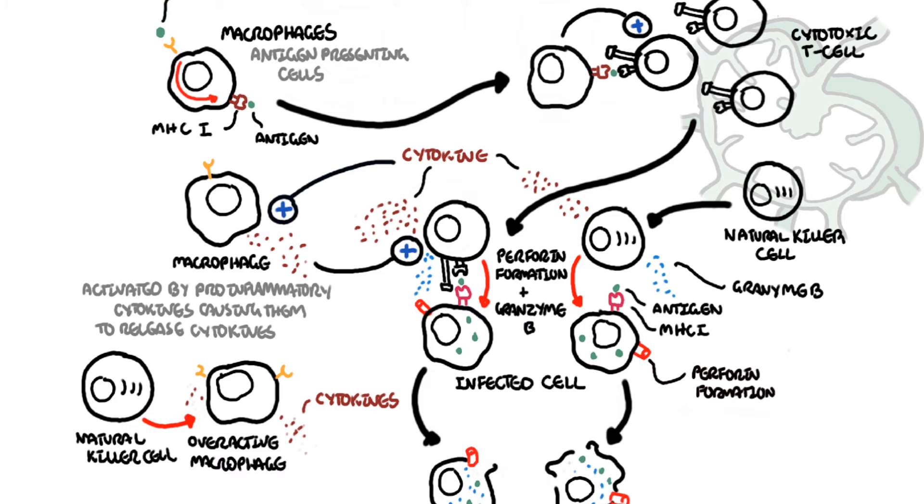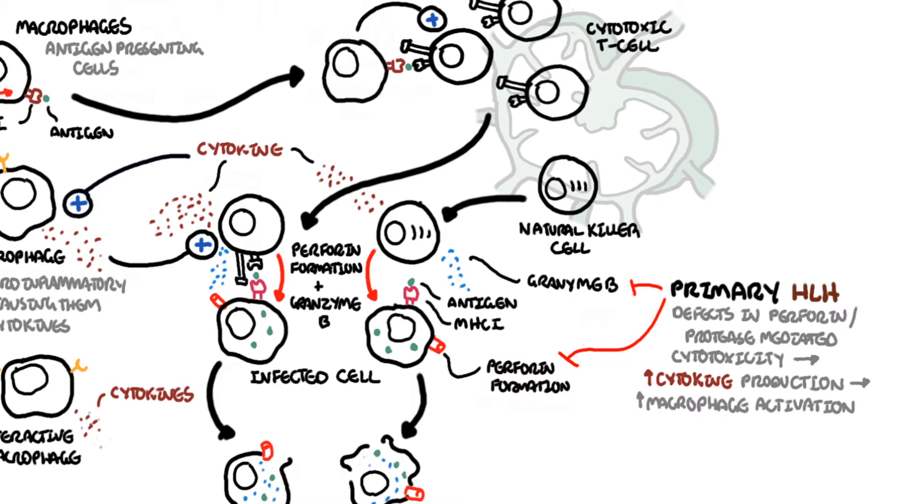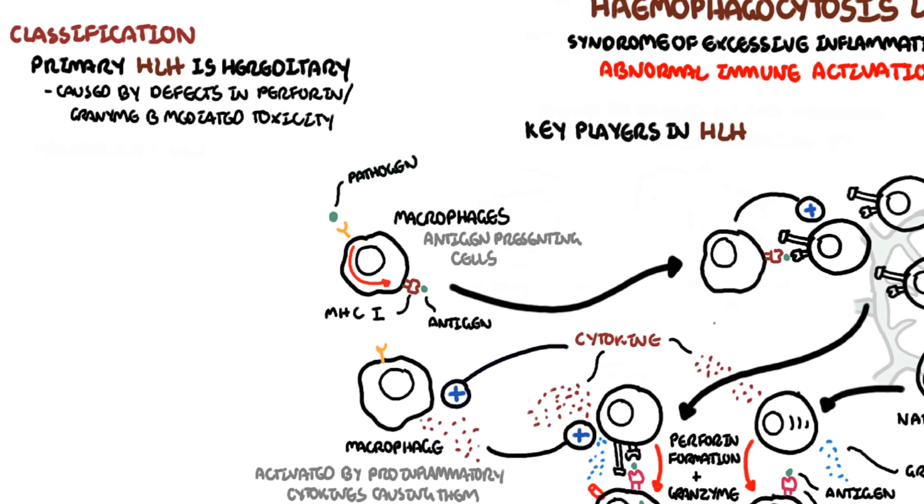In this diagram for primary hemophagocytic lymphohistiocytosis, you have defect and impaired perforin and granzyme-mediated cytotoxicity. These cells will still release a lot of cytokines because they need help, which will activate more macrophages and increase cytokine production. Also note that when macrophages are hyperactive, the cytotoxic T-cells and natural killer cells are unable to control these hyperactive macrophages because of defects in perforin and granzyme-b.